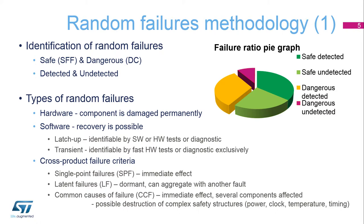Software tests can never compensate for temporary and short-lived errors efficiently, as they are considerably slower and limited by their execution time. From a cross-product point of view, we can recognize single-point, latent, or common types of failure causes. Common causes of failure require a special focus, especially as they can potentially destroy even quite complex safety structures.